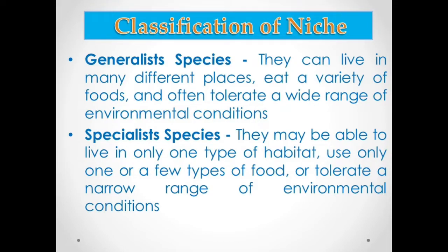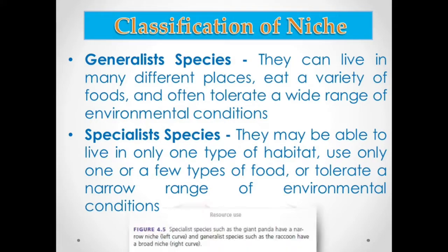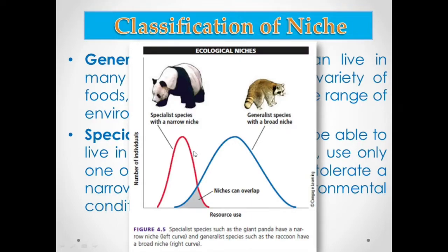Some shorebirds are also specialist species, specialized to feed on crustaceans, insects, or other organisms found on sandy beaches and adjoining coastal wetlands. As shown in the figure, a wide ecological niche characterizes a generalist species like the raccoon, which can live in different places, eat a variety of foods, and adapt to a wide range of environmental conditions. In contrast, the giant panda has a narrow ecological niche, living in only one type of habitat with few food options.